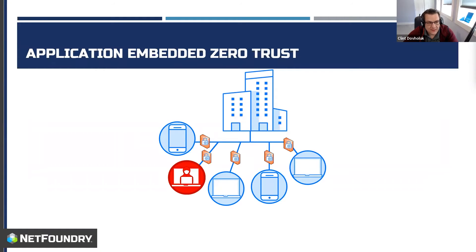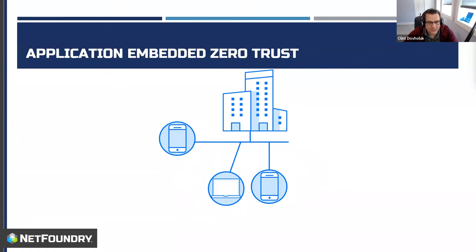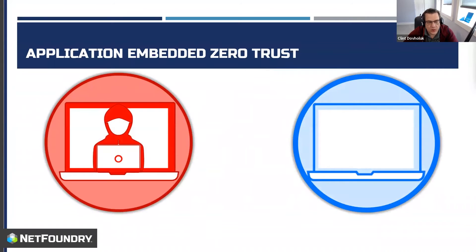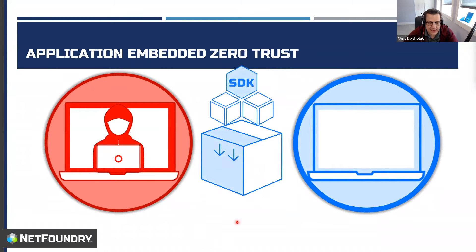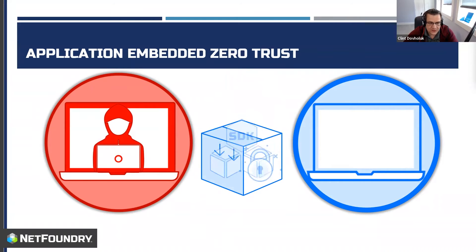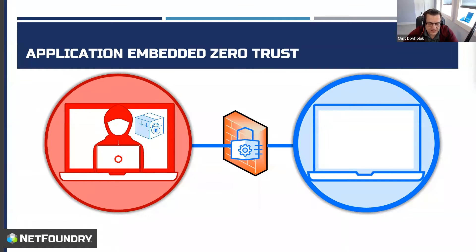What does it mean to be application embedded? We take an application, take one of those SDKs, and bake it inside that application. Now it's a zero trust application with zero trust baked into it — all those principles: device identity, authorized before connect, least privilege. We're taking that and extending it all the way into your application, all the way into your operating system, not just stopping at the network. We're bringing all that zero trust goodness directly into the applications in your computer — which really is the next phase of zero trust.